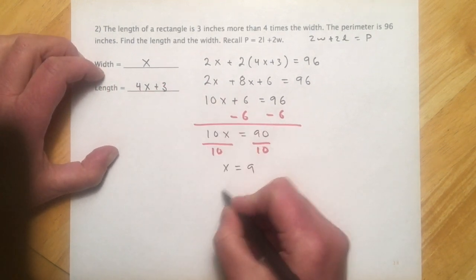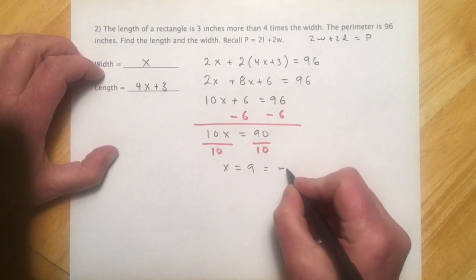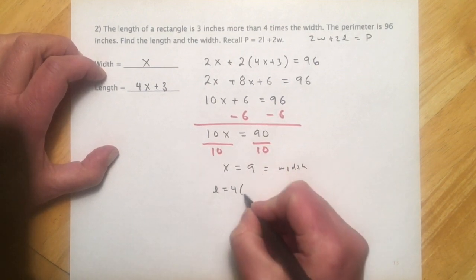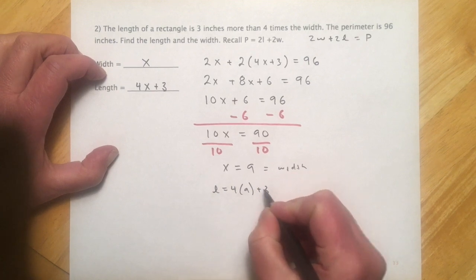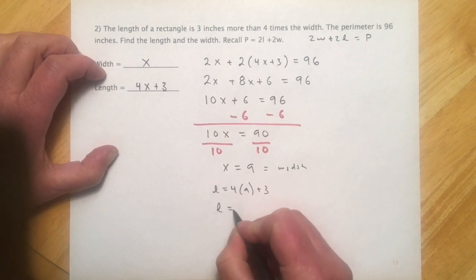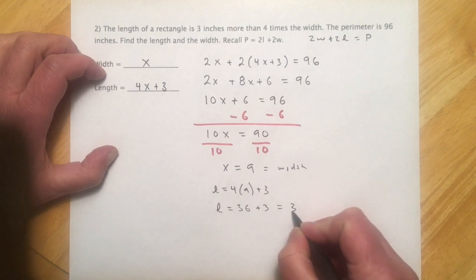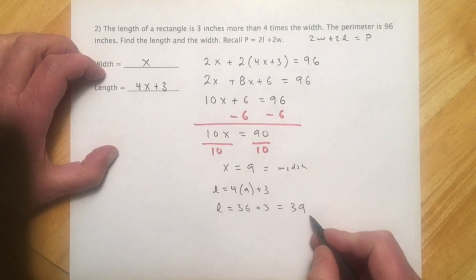And x equals 9. So then that was our width. And then our length equals 4 times 9 plus 3. So the length equals 36 plus 3, or 39. So 9 and 39.